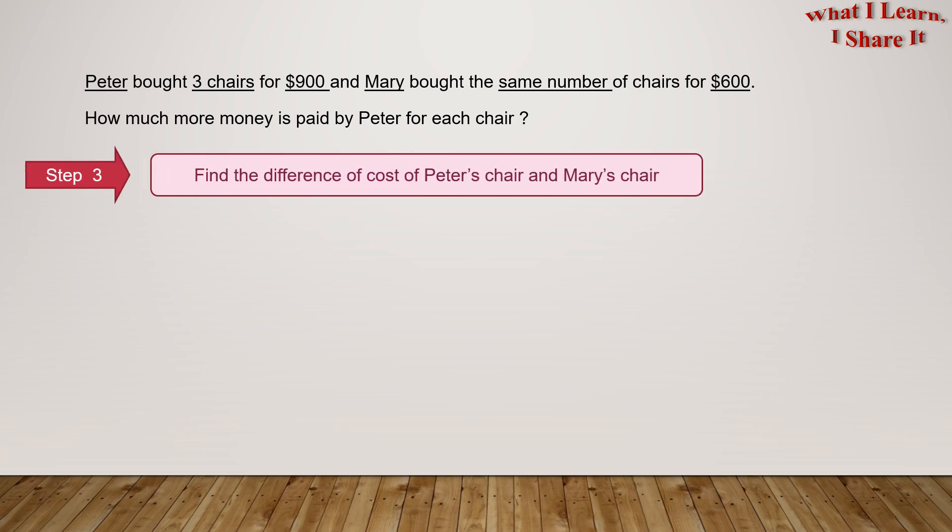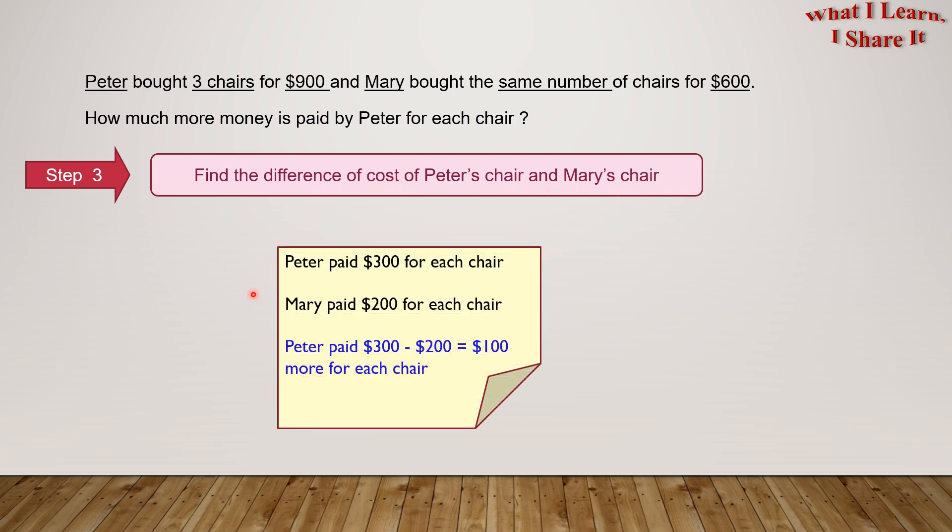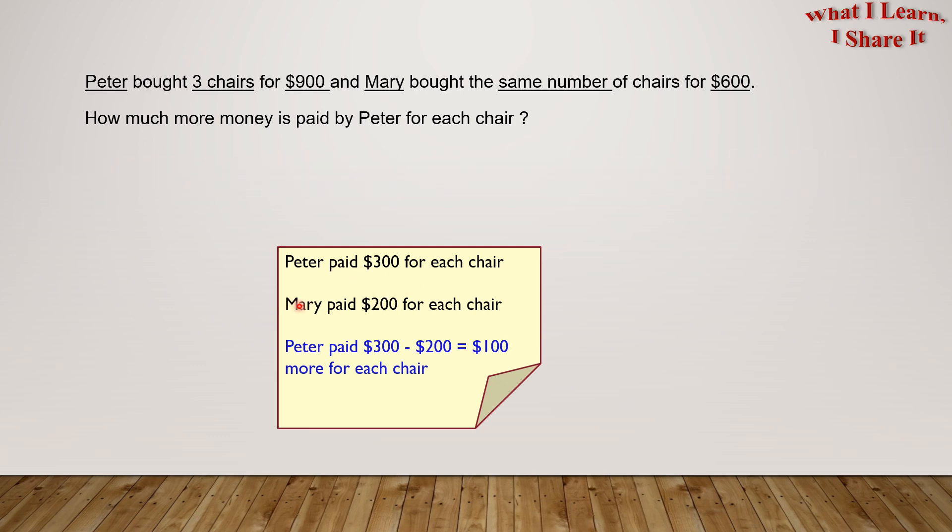Step 3. Find the difference of cost of Peter's chair and Mary's chair. So Peter paid $300 for each chair and Mary paid $200 for each chair. Peter paid $300 minus $200 equals to $100 more for each chair.